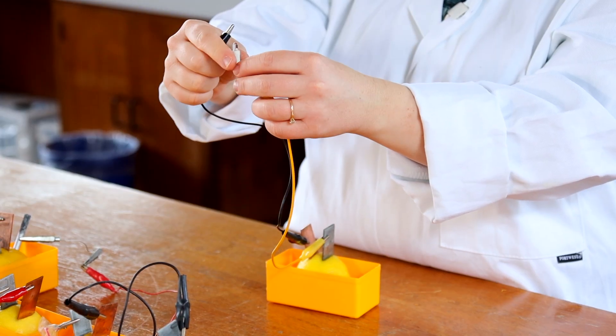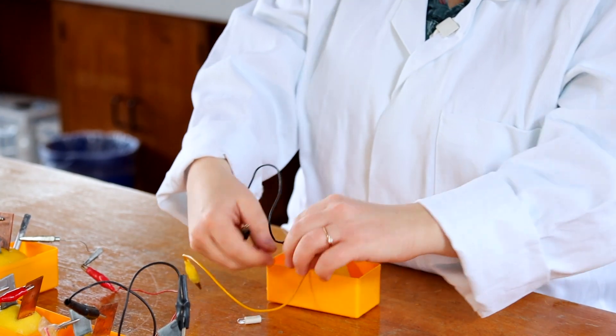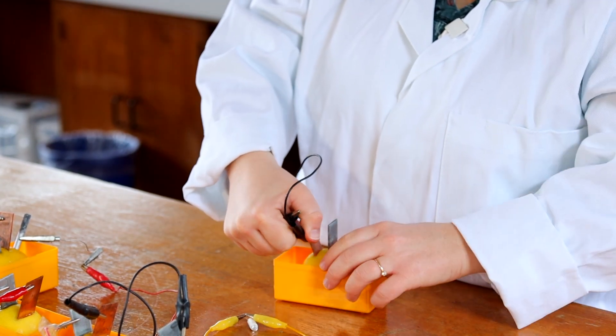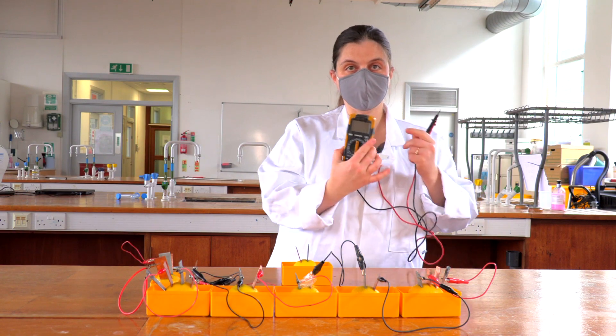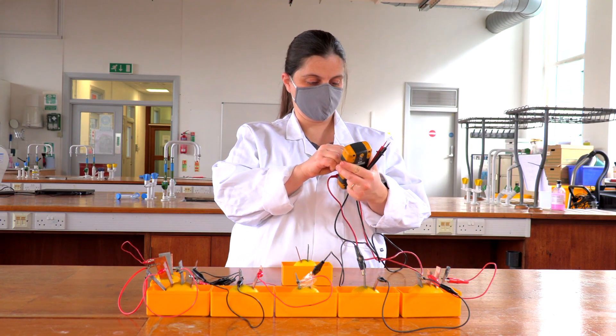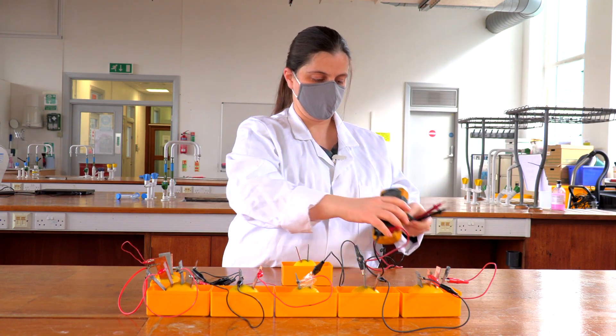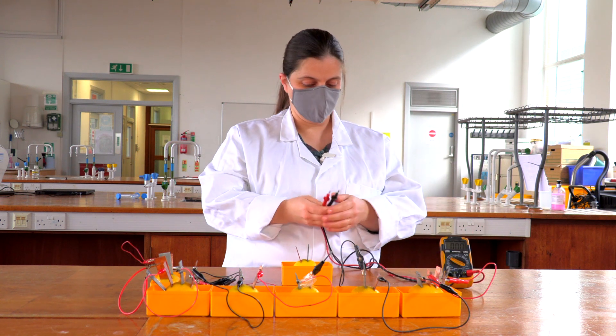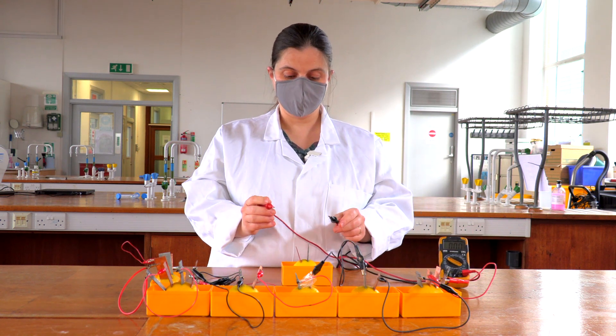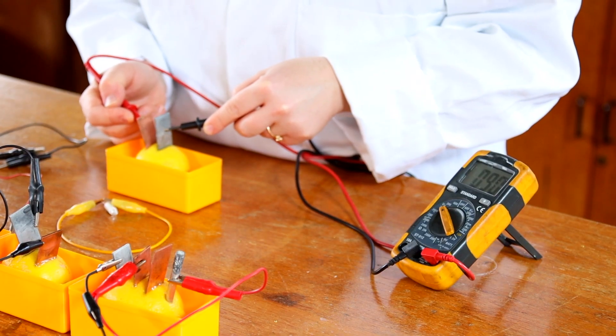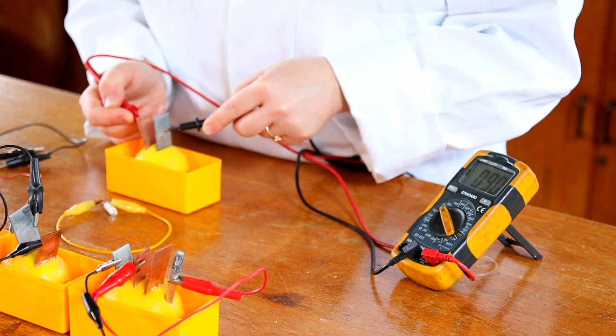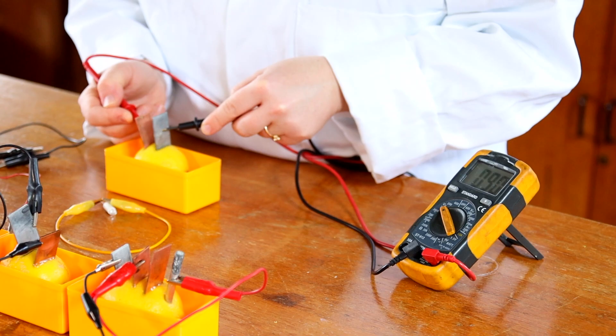To measure the voltage that we have in the battery, we will use a multimeter like this so we could measure the voltage between the two electrodes. And here we have just a bit less than one volt in this battery.